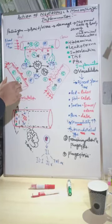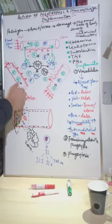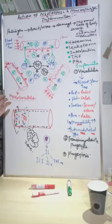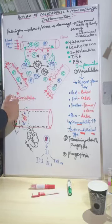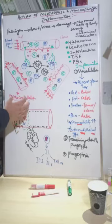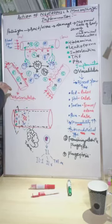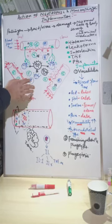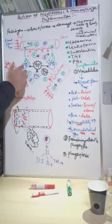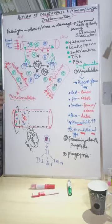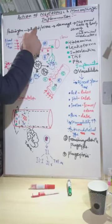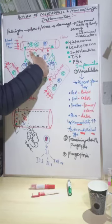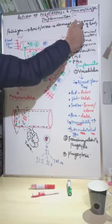Once a pathogen or infectious agent breaches the first line of defense, it enters the body. The bacteria or virus will damage the normal cells of the body, because normal cells are not well equipped with the defense system the way immune cells are. Let's see how this all happens.